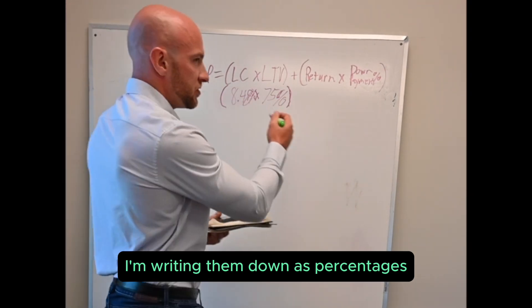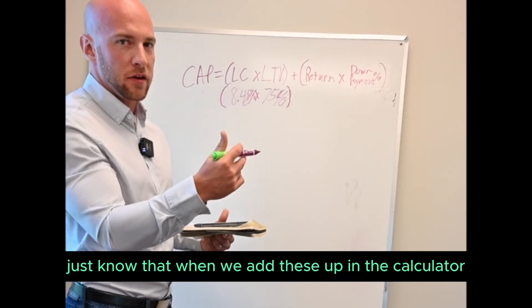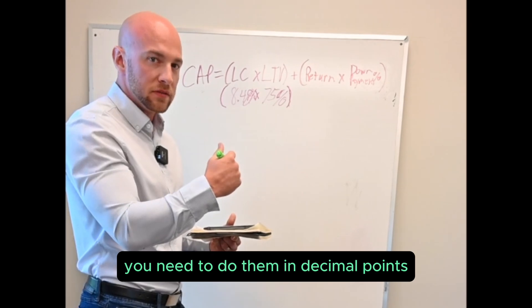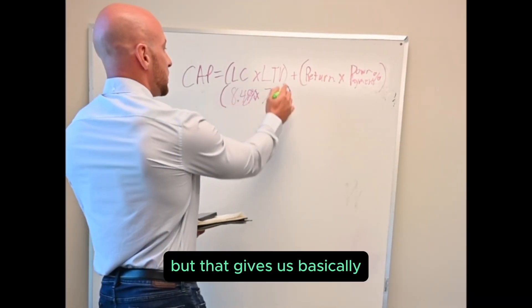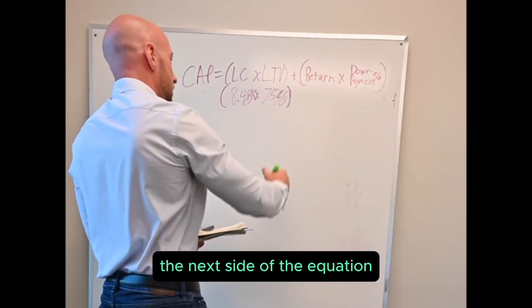I'm writing them down as percentages, just know that when we add these up in the calculator you need to do them in decimal points. But that gives us basically the debt side of the equation. The next side of the equation.